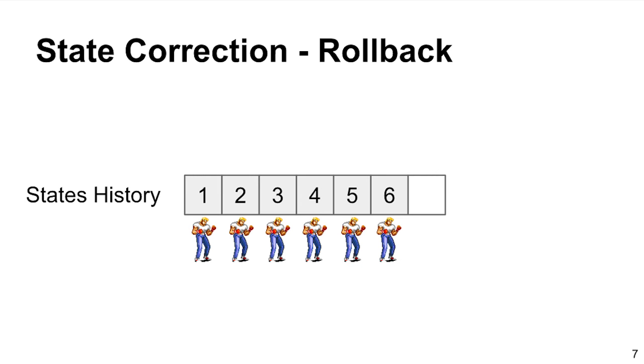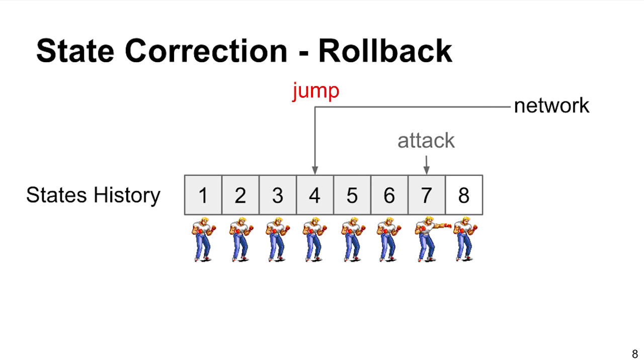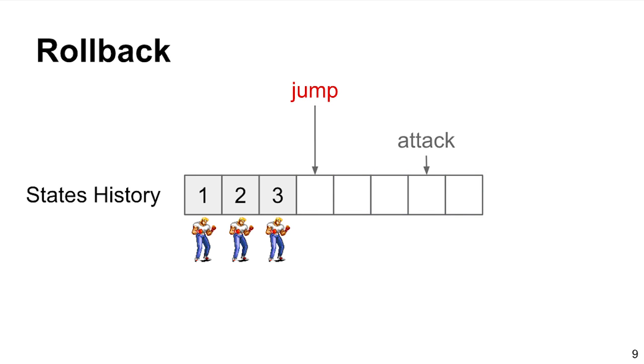For example, a character is idle until at frame 7, the player presses attack. Time continues and on frame 8, the character returns to idle state. Meanwhile, from the network arrives a jump action that took place at frame 4. Everything from 4 to 8 is erased and redone with the new action.